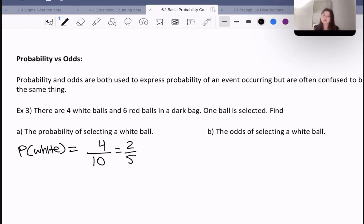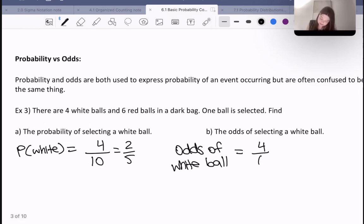What about the odds of selecting a white ball? The odds of a white ball would be equal to 4 over 6, because there are 6 non-white balls or 6 red balls. So that's going to be 4 to 6 or 2 to 3.